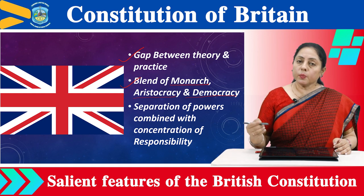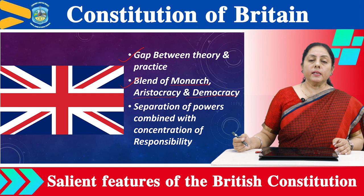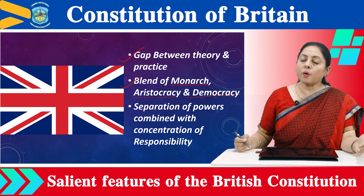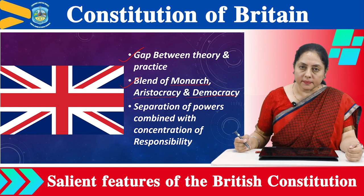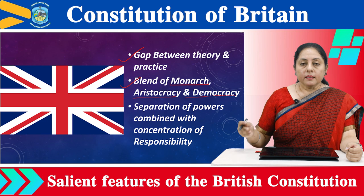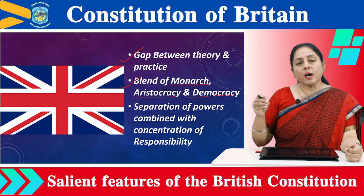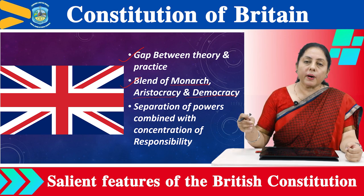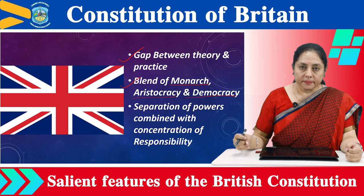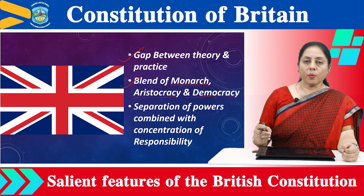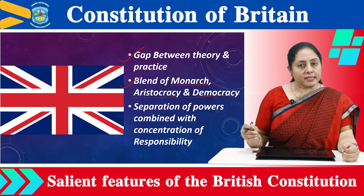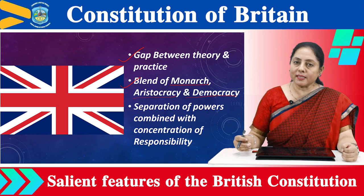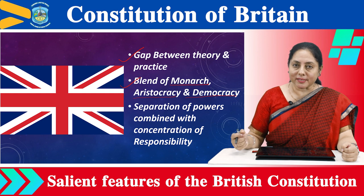The third element, democracy, is represented in the House of Commons. The members of the House of Commons are directly elected by the people. So, there is a blend of monarchy, aristocracy, and democracy.